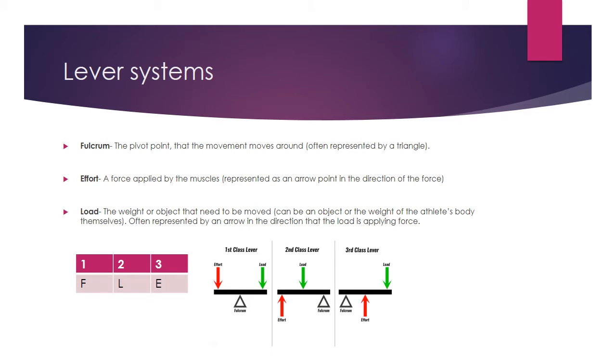So moving on, we've got three things that we need to really know and understand about lever systems: the fulcrum, the effort and the load. The fulcrum is the main pivot point that the movement moves around, and it's often represented by a triangle, as you can see on the diagram on the bottom.